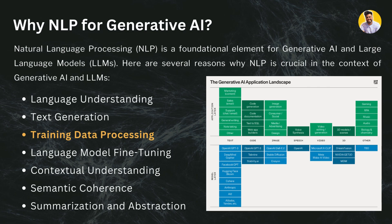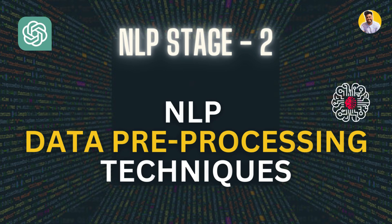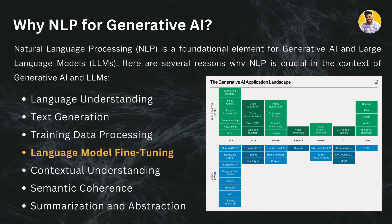The next reason is training data processing. In order to train effective generative AI or large language models, a large amount of textual data is required. With the help of NLP, you can pre-process and clean that textual data and make it suitable for large language models. In the next video — day 6 — I'll teach you all the pre-processing techniques used in NLP.